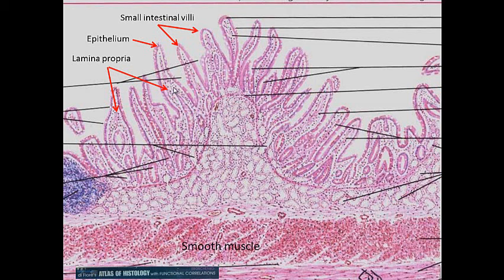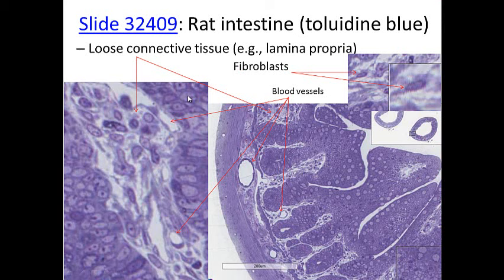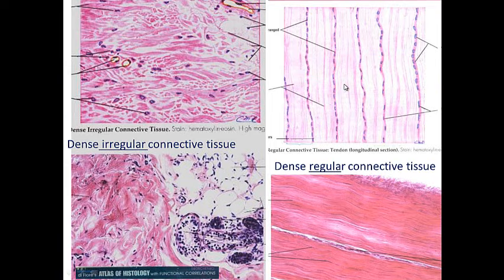Below the epithelium in the intestine — here are intestinal villi. We can see the epithelium and the lamina propria. The lamina propria is where you have loose connective tissue in the gut: a host of cells and not many fibers, loose in the lamina propria below the epithelium. This is also where blood vessels are located, providing nutrients for the epithelial cells.